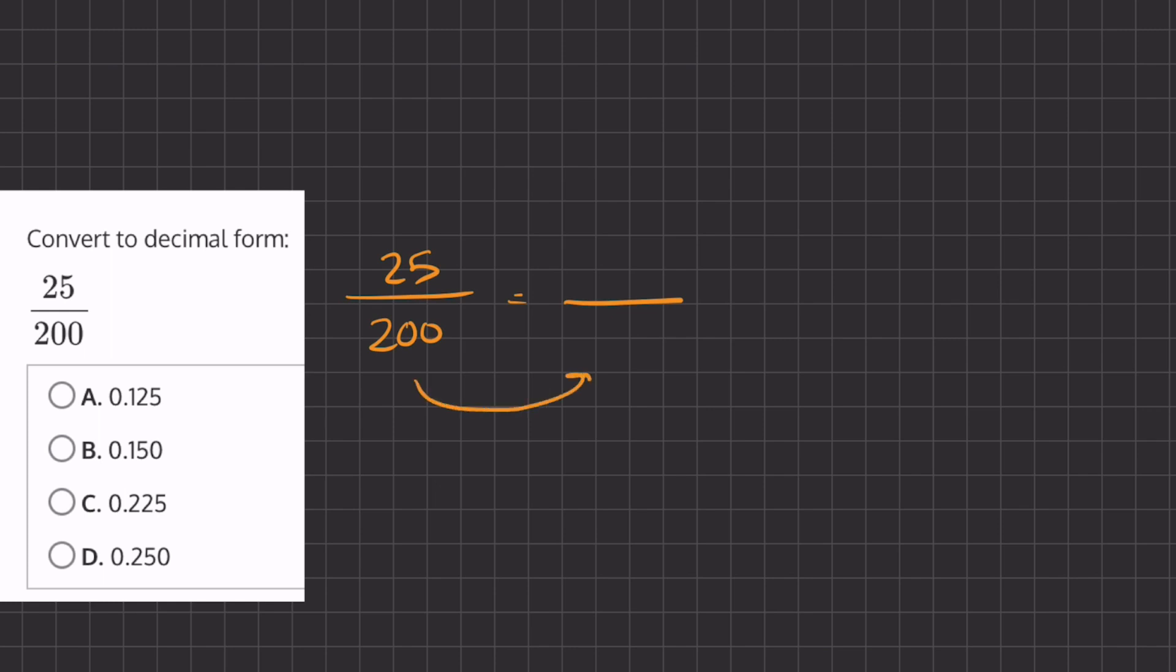So to turn 200, we can turn it to 100 by dividing by 2, but this 25 is not quite divisible by 2. So we can also just multiply by 5 and we'll turn this 200 into 1000.